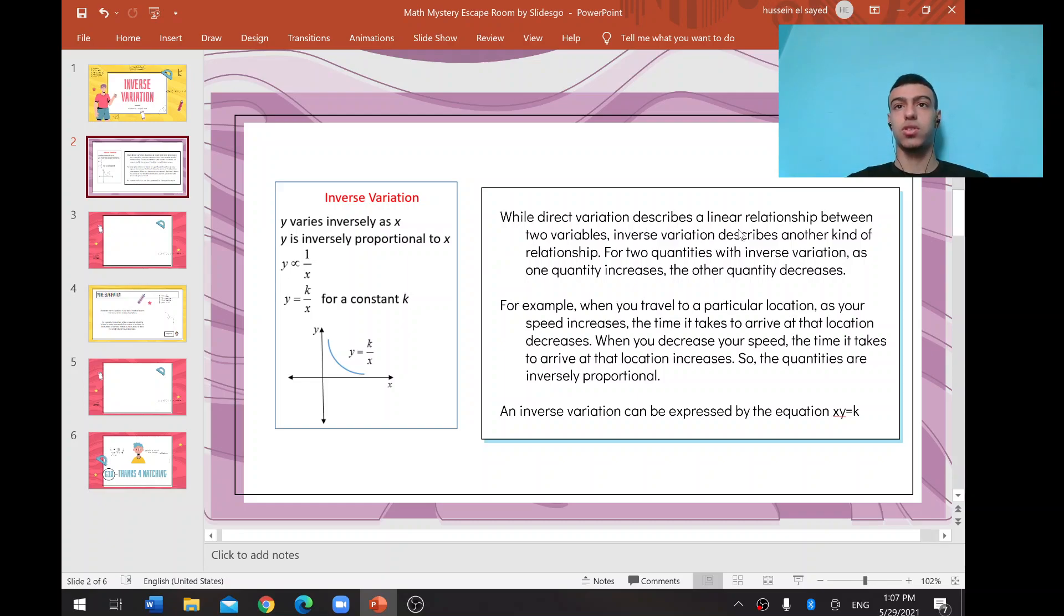While direct variation describes a linear relationship between two variables, inverse variation describes another kind of relationship. For two quantities with inverse variation,